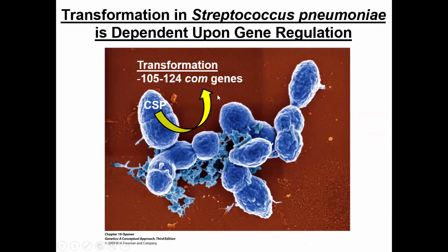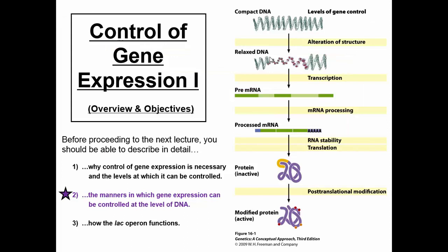When these COM genes are activated, something called competent-stimulating peptide, or CSP, is released. The COM genes are the DNA; CSP is the protein. These competent-stimulating peptides bind to receptors on the bacterial surface, and that allows transformation to occur — or DNA to enter into the cell. What activates the COM genes is stressful conditions. When bacteria encounter stressful conditions, they want to increase their genetic diversity to ensure their species survives. So stressful conditions activate those COM genes, which increases transformation or uptake of other DNA.